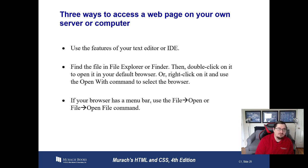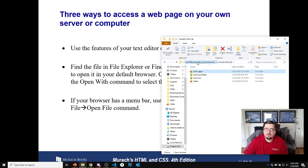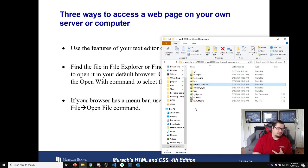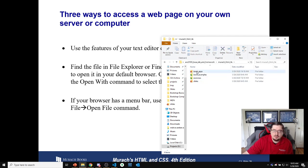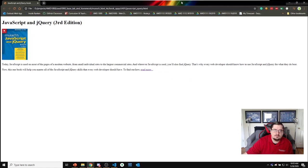There are a few different ways to get to a web page that is on your computer. You can use the features in your text editor or IDE, or you can use the file explorer to find it and double-click on it. For example, if I've pulled down the repo — which you should have received through Google Classroom — I can go into the Muroc HTML4e folder, then Book Apps, then Chapter 1, and open the JavaScript jQuery HTML file. Double-clicking it opens it in my browser.